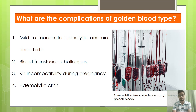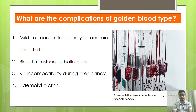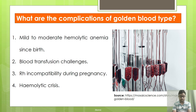Rh incompatibility during pregnancy is another complication. Similar to erythroblastosis fetalis seen in blood incompatibility cases, Rh incompatibility also occurs here. If a mother has Rh null blood but the child has Rh positive blood, the child's blood entering the mother can cause a severe immune response, ultimately leading to abortion or miscarriage. Additionally, hemolytic crisis is another serious complication associated with this blood type.